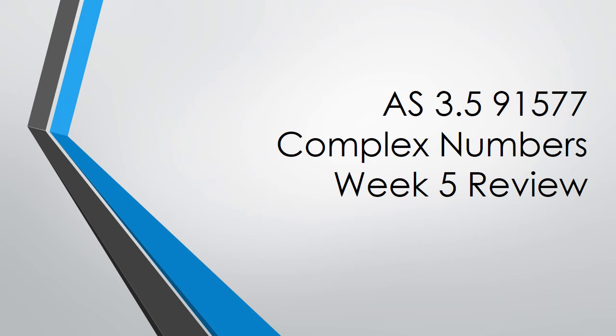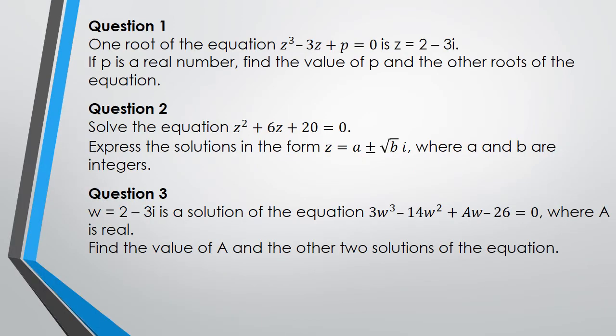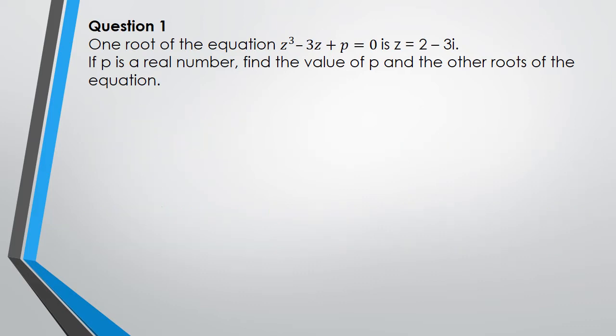Hey guys, welcome to complex numbers week 5 review. These are the three questions that we're going to be looking at today. As usual, I'd recommend you pause here, try and work out these questions. Question one: one root of the equation is given as z = 2 - 3i. If p is a real number, find the value of p and the other roots of the equation.